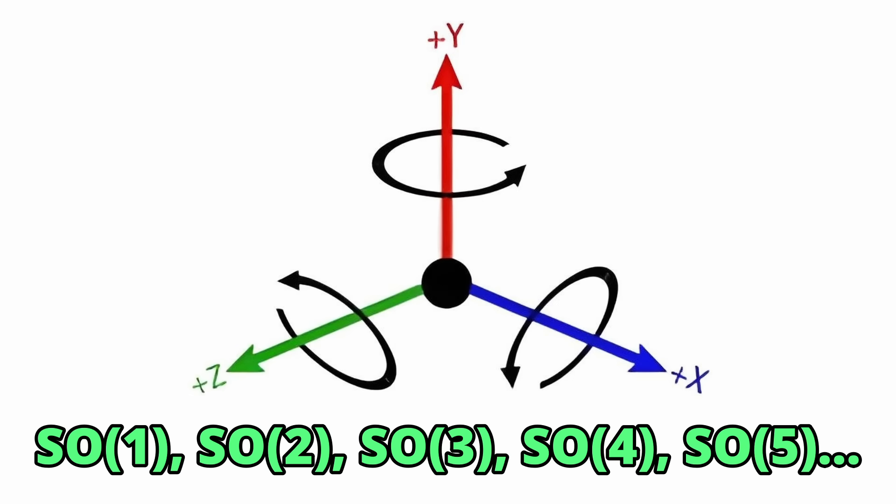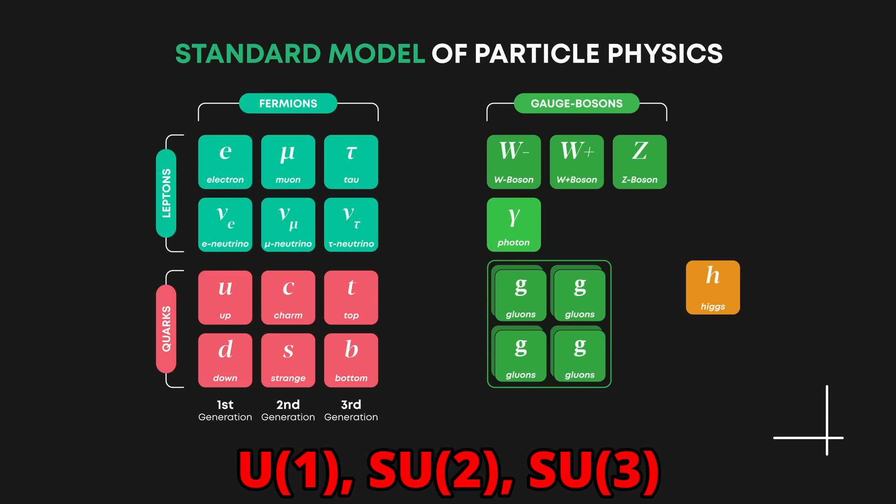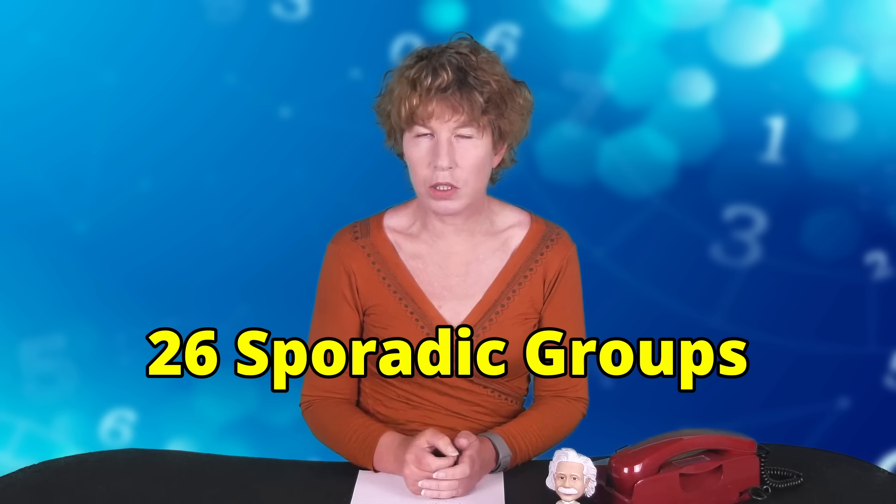These rotation groups exist in any number of dimensions. In fact, most groups exist in these infinite countable series and are reasonably well behaved, like the groups in the standard model of particle physics: U(1), SU(2), and SU(3). However, besides these infinite series of groups, there are also 26 so-called sporadic simple groups.